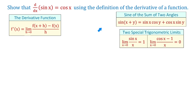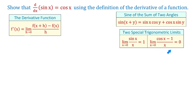In the process, we will also need the trigonometric identity for the sine of the sum of two angles: sine of x plus y equals sine of x cosine of y plus cosine of x sine of y. We will also need the two special trigonometric limits: the limit of sine of x over x as x approaches 0 is 1, and the limit of cosine of x minus 1 over x as x approaches 0 is 0.